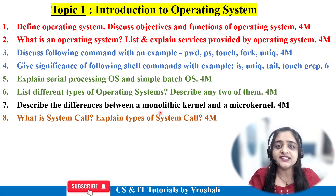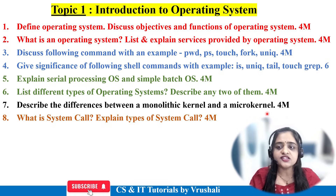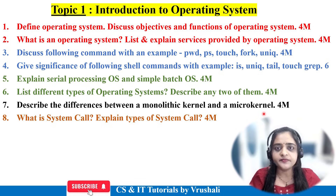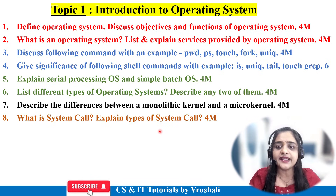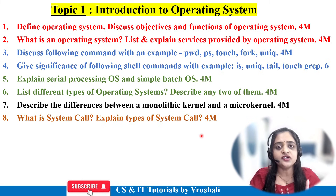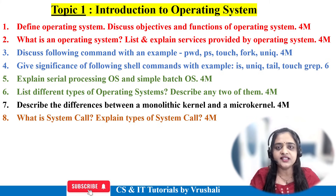Next question is: describe the difference between monolithic kernel and microkernel. This question is generally asked for four to six marks. I am suggesting you prepare a tabular difference between these with six to seven points, with some examples, and also draw necessary diagrams accordingly. The last question is: what exactly is a system call, and explain types of system calls for four marks. These are the important questions on the first unit, and we have already discussed all of them in our previous session.